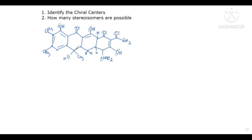Now let's look at this carbon here. It has an OH attached and a CH3. Those are two different things. When we look further, on one side we have a carbon with a double bond attached, and on the other side a straight chain carbon with no double bond — two different groups. So we count: group one, group two, group three, group four. This qualifies as a chiral center — that's chiral center number one.